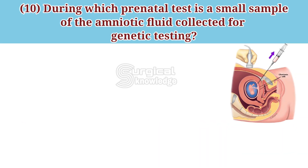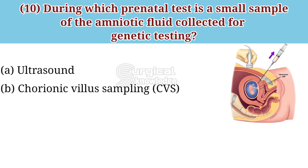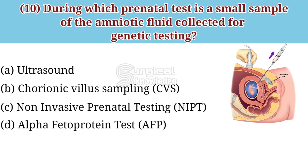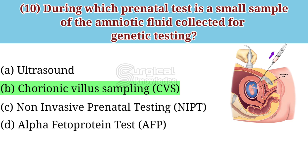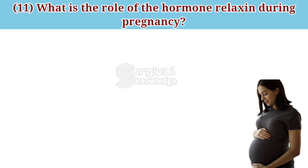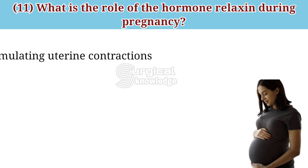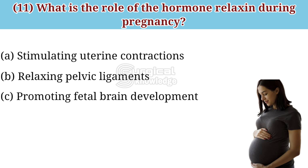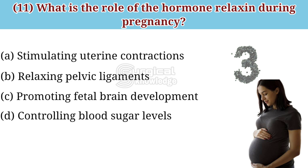During which prenatal test is a small sample of amniotic fluid collected for genetic testing? Options: ultrasound, chorionic villus sampling (CVS), non-invasive prenatal test (NIPT), alpha-fetoprotein test (AFP). The correct answer is chorionic villus sampling (CVS). What is the role of the hormone relaxin during pregnancy? Options: stimulating uterine contraction, relaxing pelvic ligaments, promoting fetal brain development, controlling blood sugar levels.